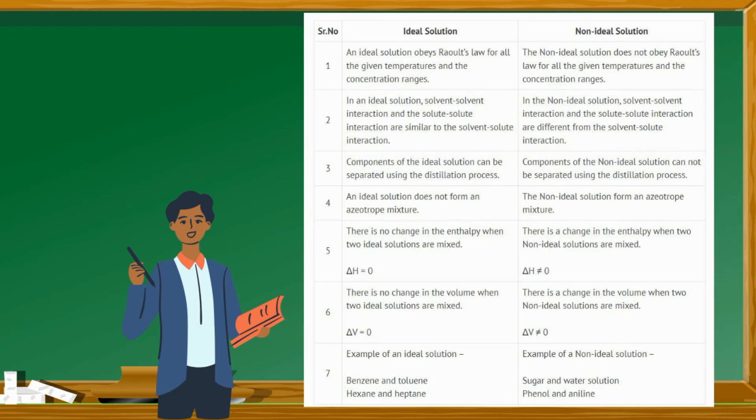Examples of an ideal solution: Benzene and toluene, Hexane and heptane. Examples of a non-ideal solution: Sugar and water solution, Phenol and aniline.